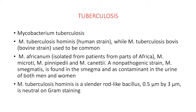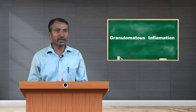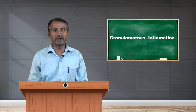A non-pathogenic strain called Mycobacterium smegmatis is found in smegma and can contaminate the urine of both men and women. Mycobacterium tuberculosis hominis is a slender rod-like bacillus, 0.5 micrometer by 2–3 micrometers, in neutral or gram staining.